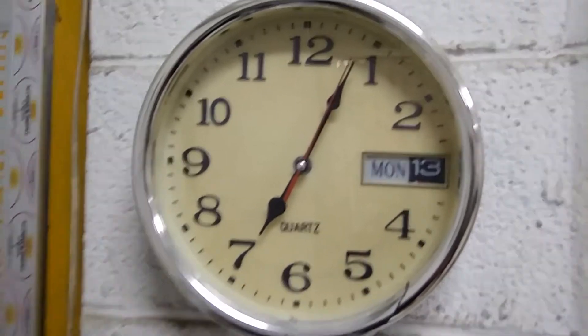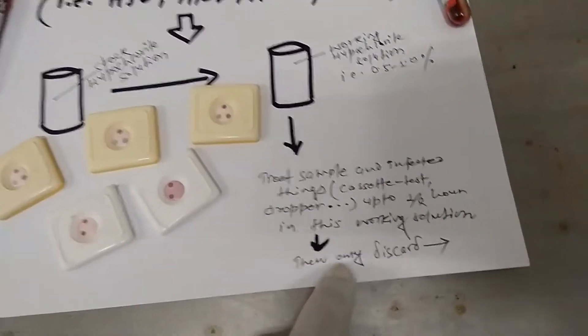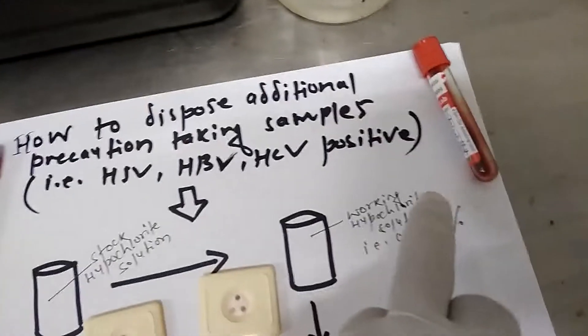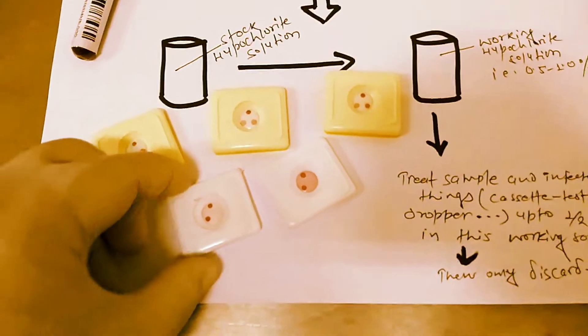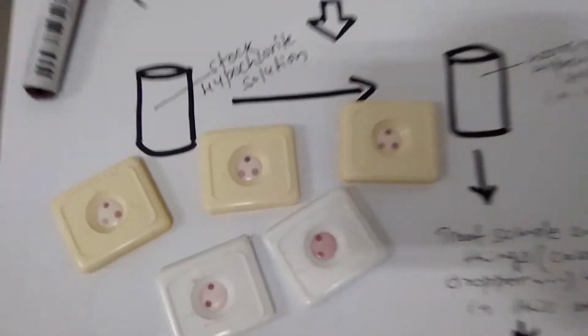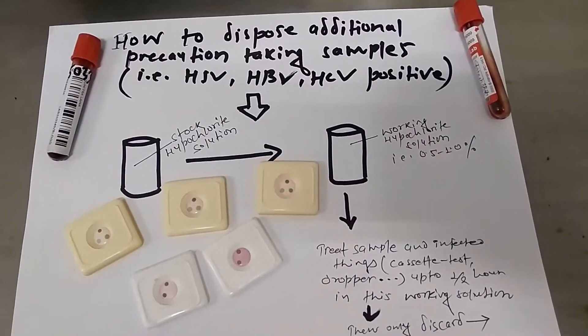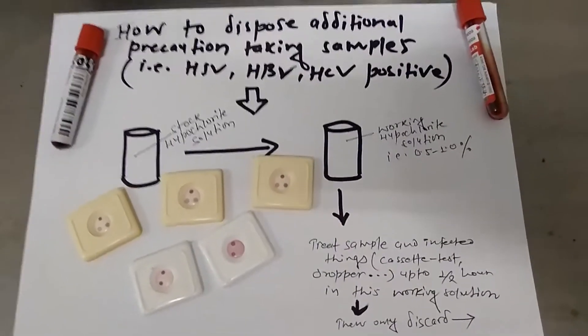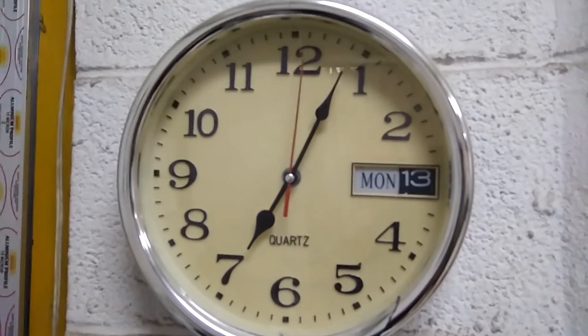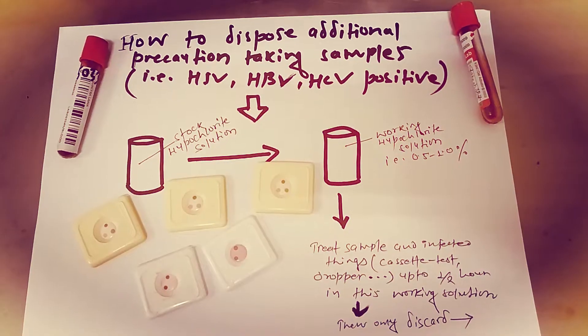Many laboratory workers asking one common question: how to decontaminate the floor if there is spoilage of HIV positive sample? Very simple - flood the floor with 0.5% hypochlorite solution and leave half an hour and finally clean.